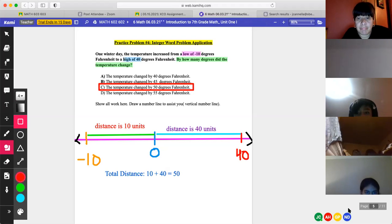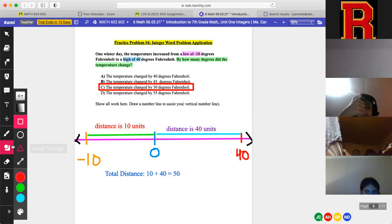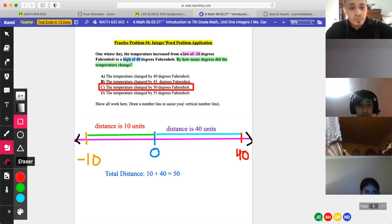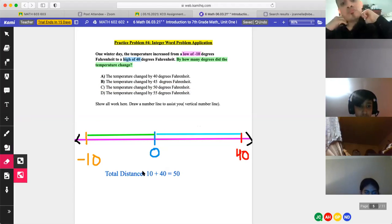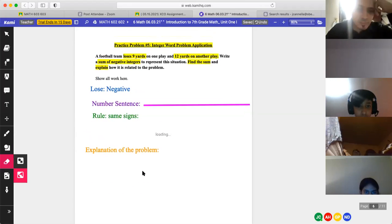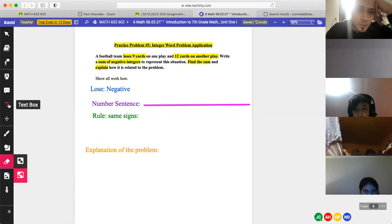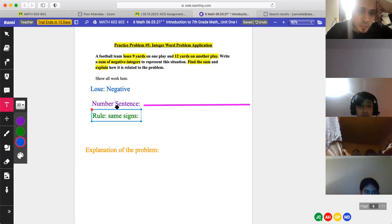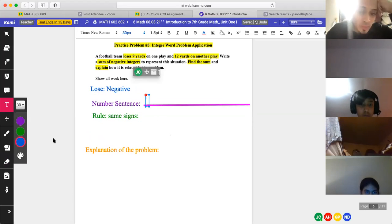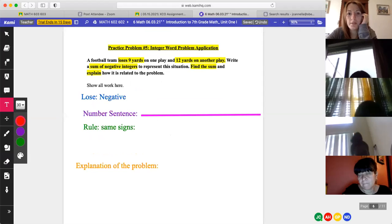We could probably do another one together and then we can go in a breakout room. How's that sound? I like that idea. All right. Let's do it. Hold on a second, Mr. R. Let's do it. Let's do one more together and then we will go in a breakout room. Problem number five. Mr. R is going to read it and he's going to pick someone to help him out. Okay. A football team loses nine yards on one play and 12 yards on another play. Write a sum of negative inches to represent the situation. Find the sum and explain how it is related to the problem.